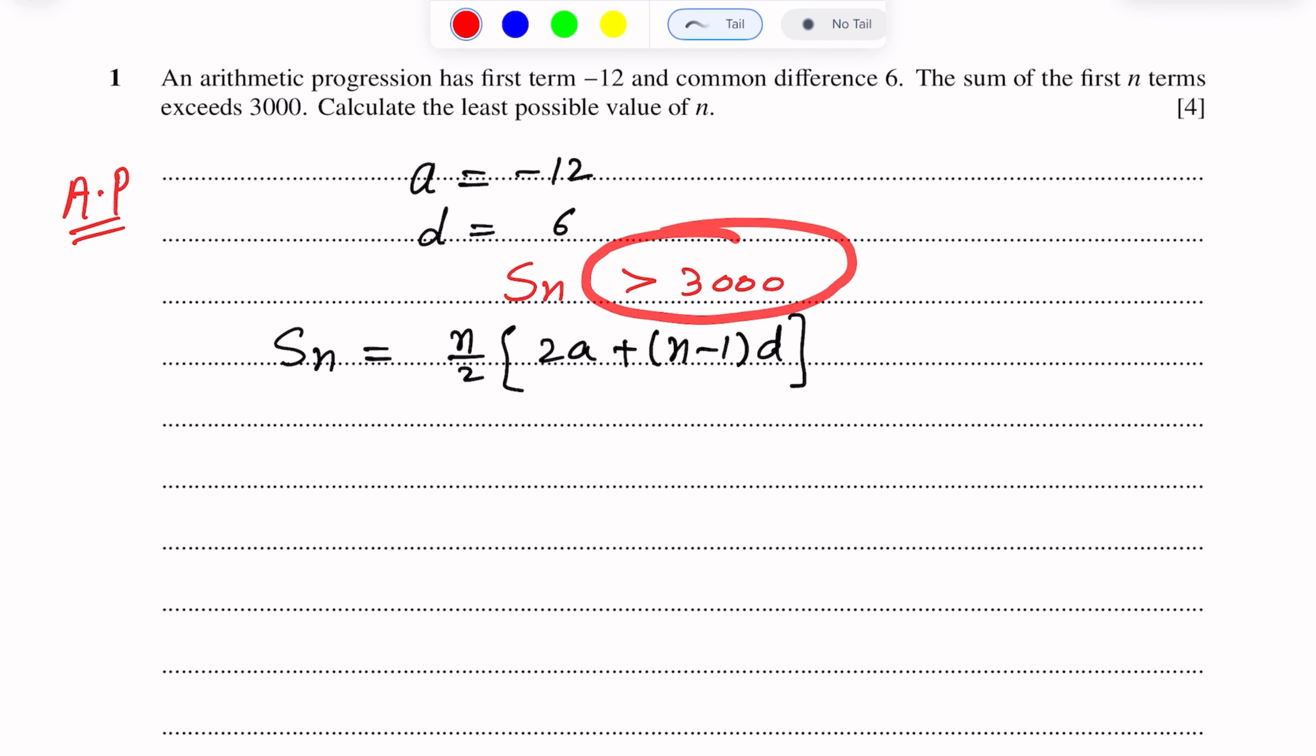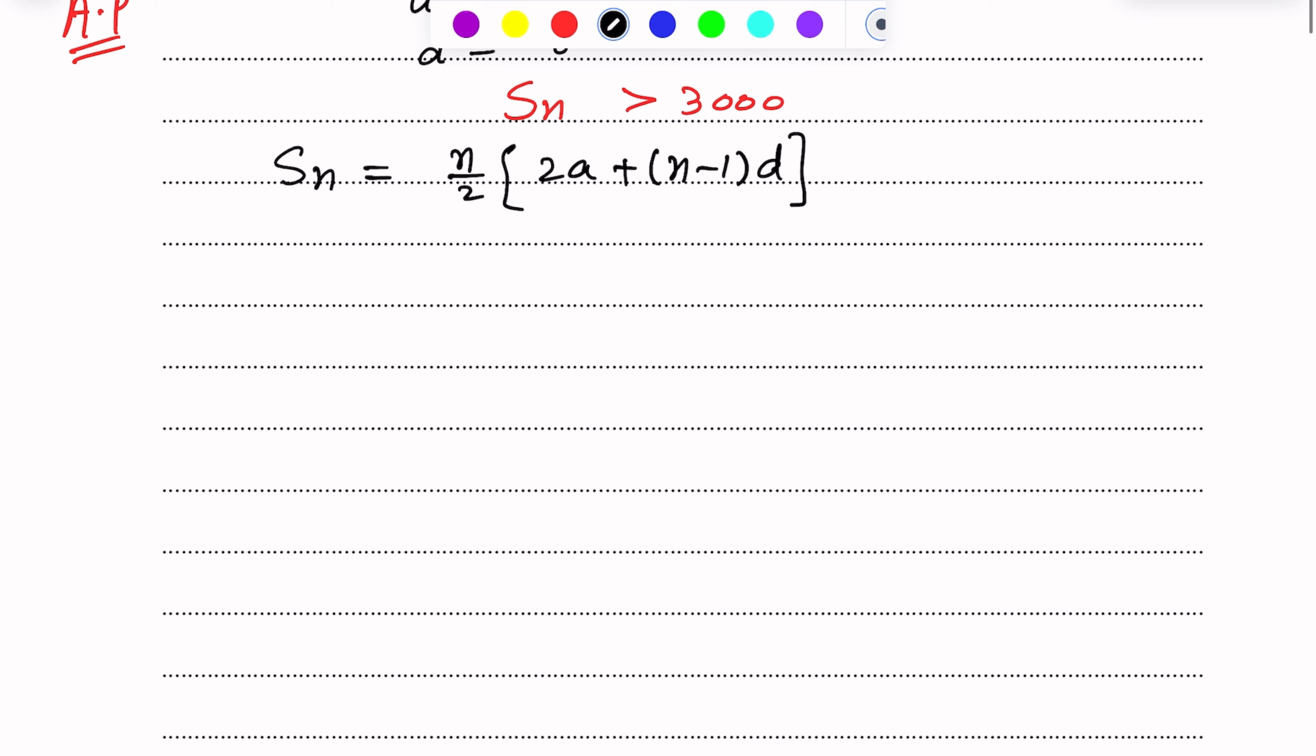Sn greater than 3000 means this is greater than 3000. Here we can find n values. We can find n terms, so n over 2 into 2a plus n minus 1 into d, greater than 3000.